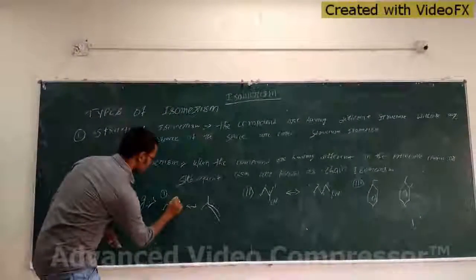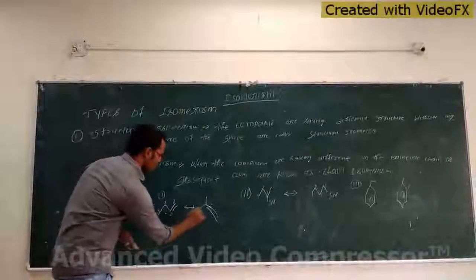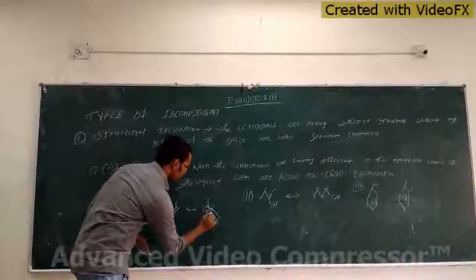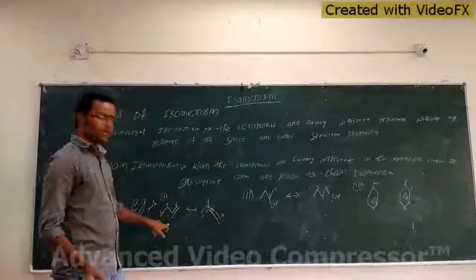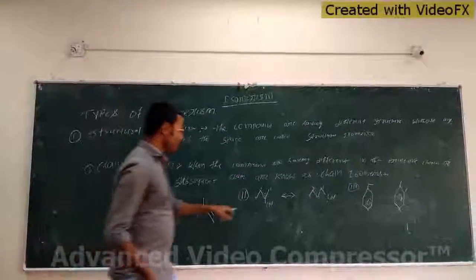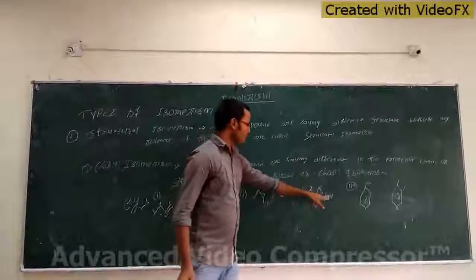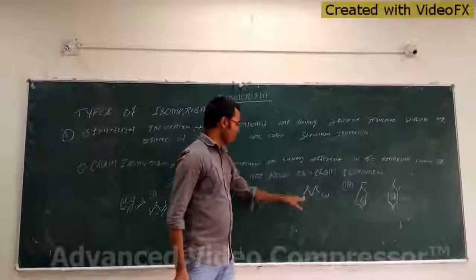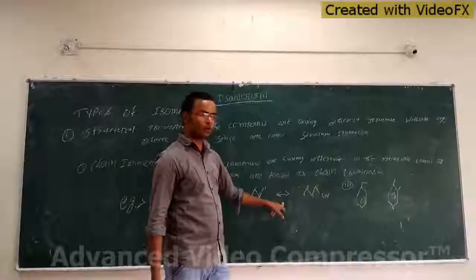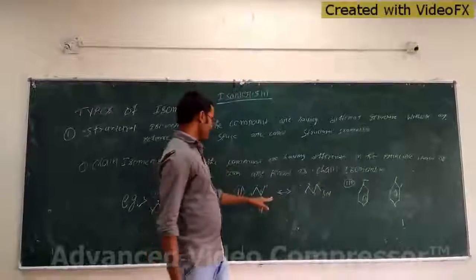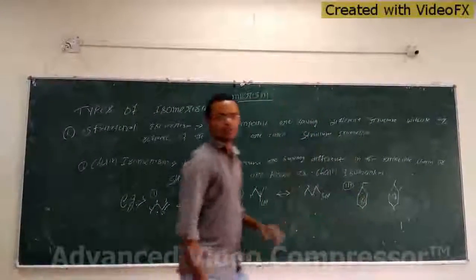Just see the example. This example has a carbon chain of 1, 2, 3, 2, 1 and another of 1, 2, 3. The parent chains are different, so this is a chain isomer. See another example. This is a parent chain of 1, 2, 3, 4, 5 and this is 1, 2, 3, 4. This is also called a chain isomer.